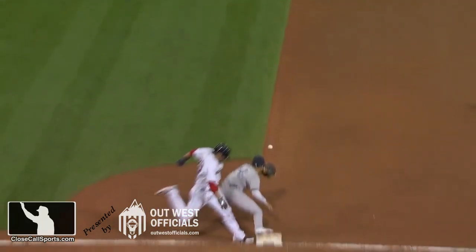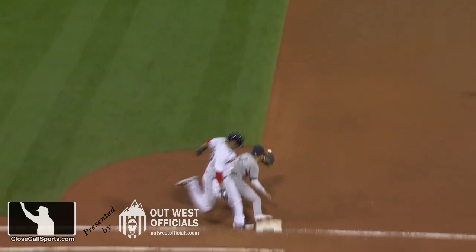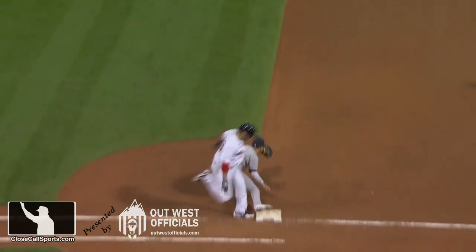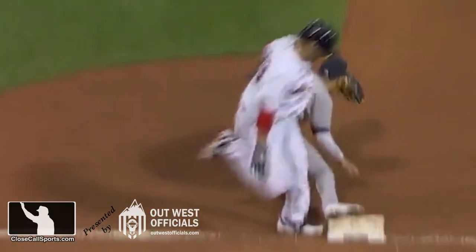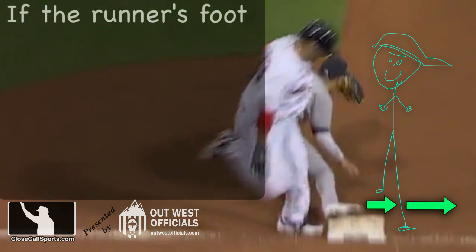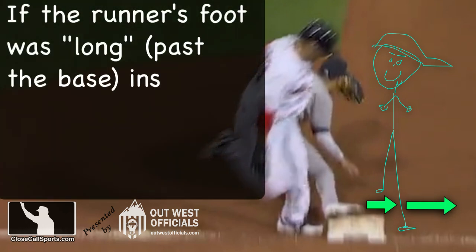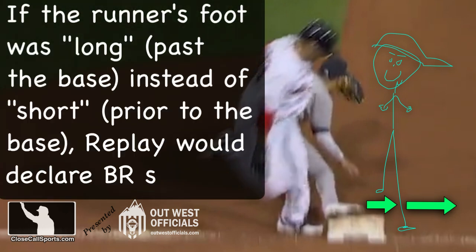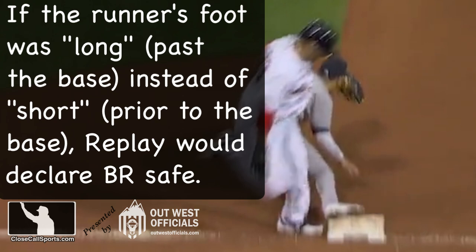Had the runner overstepped the base and actually gone over and touched the other side of it past the base, then yes, replay would have actually declared this runner safe because there was no appeal filed for the missed base touch. You have to actually file an appeal to get that ruling.